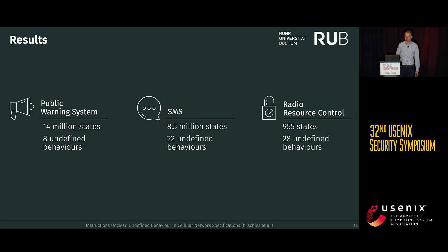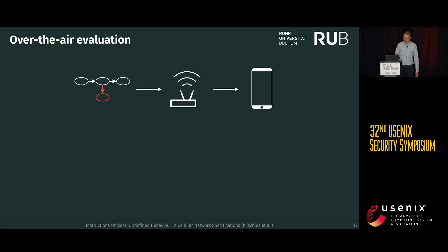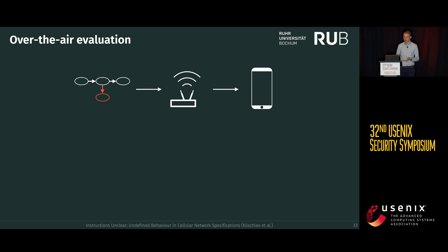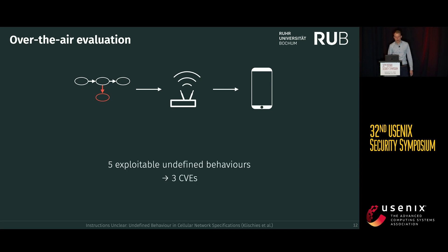We derived between 8 and 28 undefined behaviors for each of the three components. We then conducted an over-the-air evaluation, taking the inferred undefined behaviors and putting them into a software-defined radio that reassembled an experimental cellular test network. Testing with real commercial phones, we found five exploitable undefined behaviors, resulting in three CVEs.